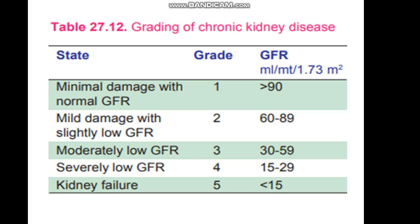Another substance now sometimes used for the clearance test is Cystatin C as a GFR marker. Cystatin C is a non-glycosylated protein. It is formed in high concentration in biological fluids and is virtually present in all organs of the body. Blood level is nearly 0.8 to 1.2 mg per litre. It is produced at a constant rate and freely filtered at the glomerulus. It is completely reabsorbed but degraded in the tubules. These properties make it a substance of choice for GFR calculation.